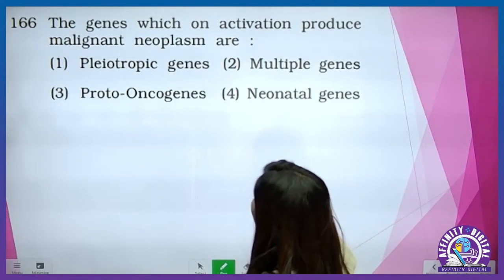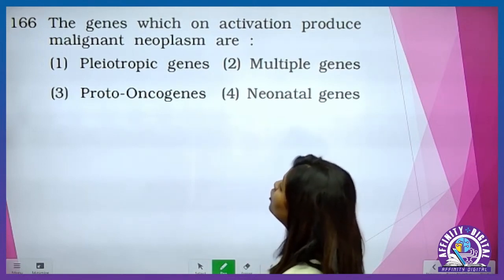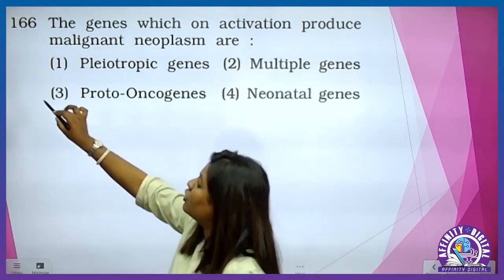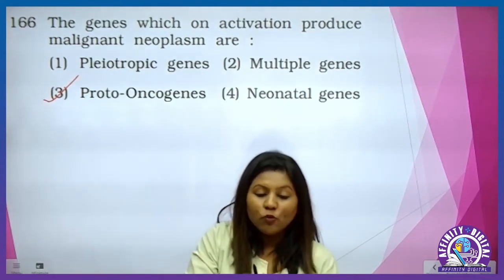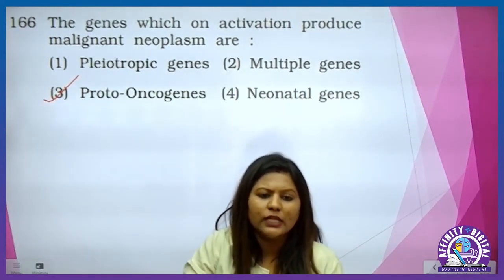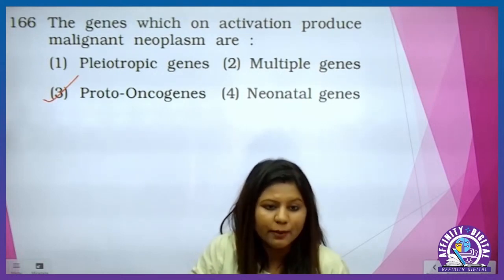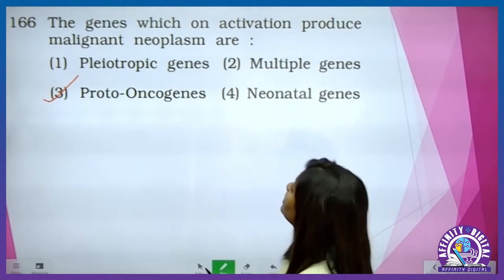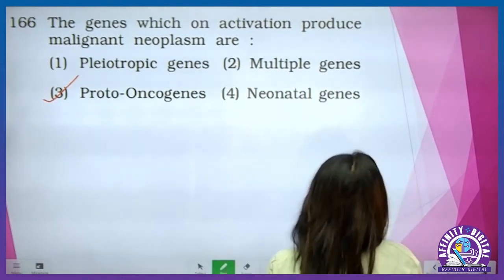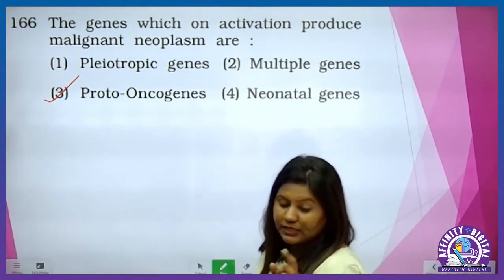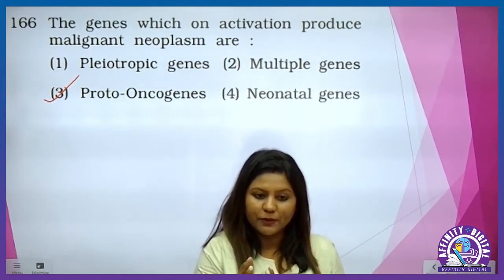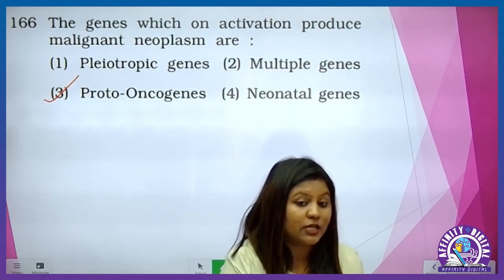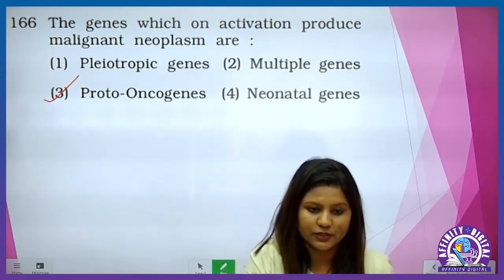The gene which on activation produces malignant neoplasm — it is of course the proto-oncogene. Proto matlab inactive hai. Woh jab activate ho jata hai, toh wo divide karne lagega abnormally. It is the proto-oncogene which on activation undergoes neoplasm production. Neoplasm matlab collection that is formed after abnormal growth of the cell — after abnormal proliferation.